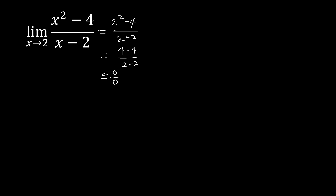In the case of rational functions, when finding the limit using substitution gives 0 over 0, we need to do something about our function. That something is factoring — we will factor the function involved.